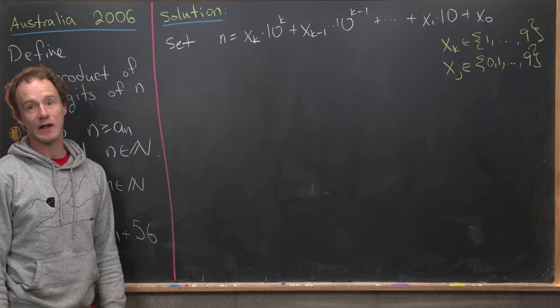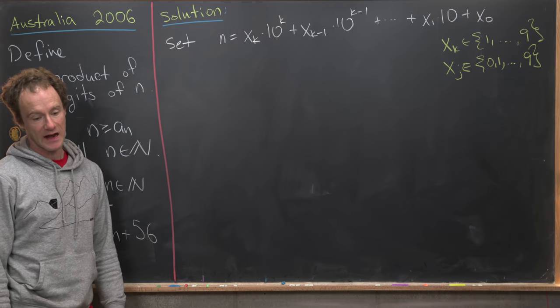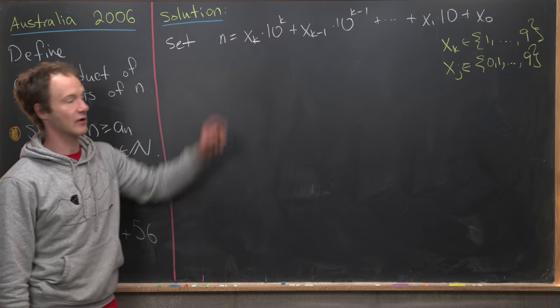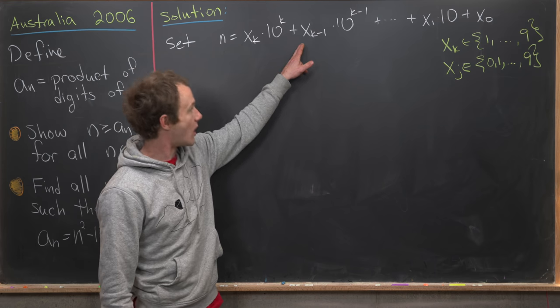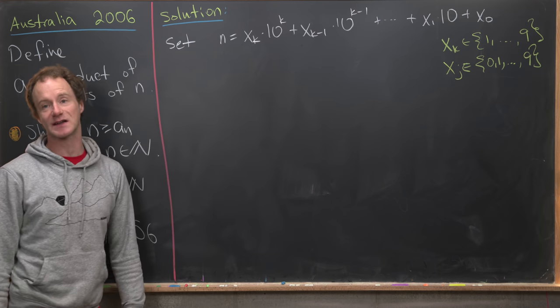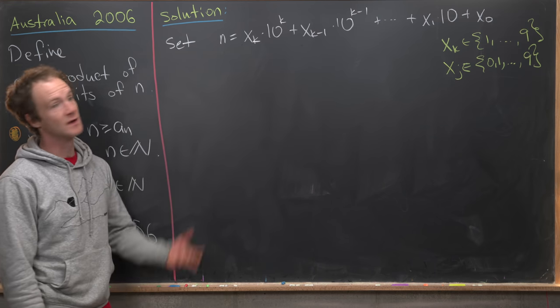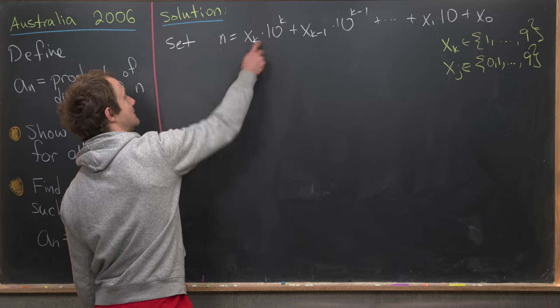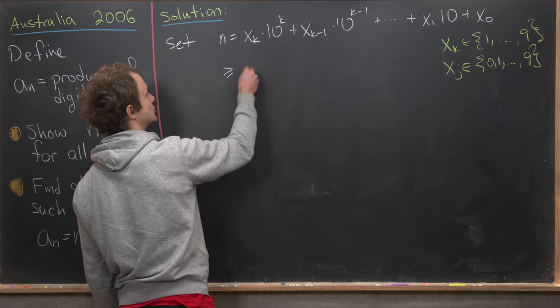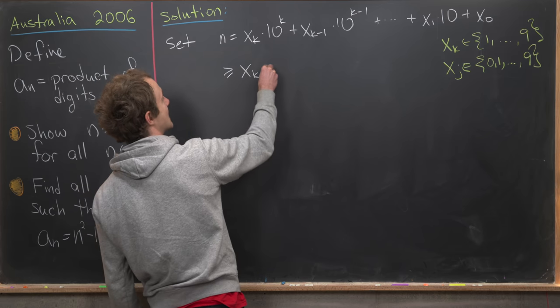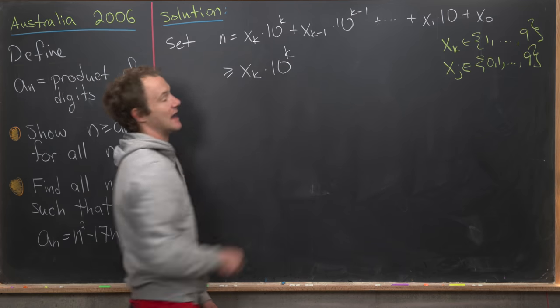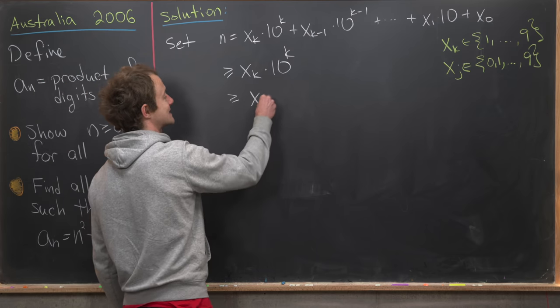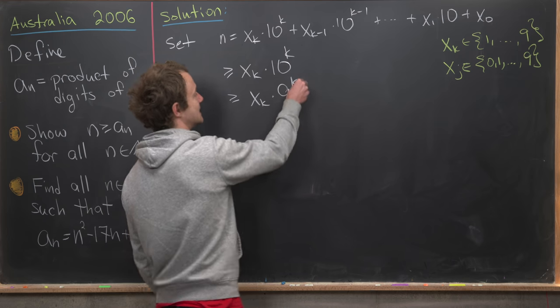Next, I want to start doing an inequality here. I will notice that I can put a greater than or equal to if I just leave off all of these terms after x_{k-1}. So n is equal to this expanded in base-10, but that makes it bigger than or equal to x_k × 10^k. But now we see that 10 is bigger than 9, so this is bigger than or equal to x_k × 9^k.